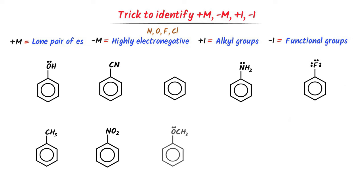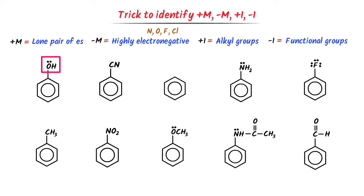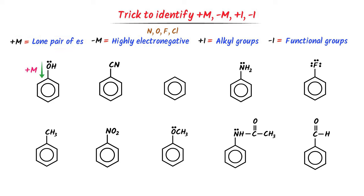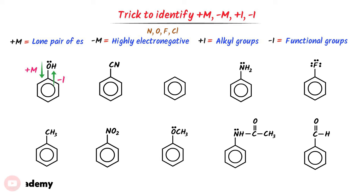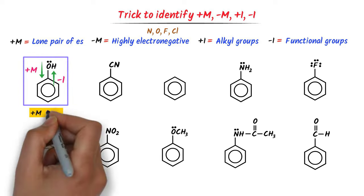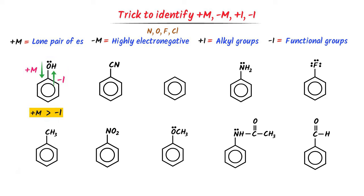Consider these organic compounds. In the first case, the OH group has a lone pair of electrons — it will donate these through resonance, so it shows positive M effect. Secondly, oxygen is an electronegative atom that attracts the shared pair of electrons, and OH as a functional group shows negative I effect. Mesomeric effect donates the lone pair in one direction while inductive effect pulls the shared pair in the opposite direction. We know that mesomeric effect dominates inductive effect, so here positive M is greater than negative I.